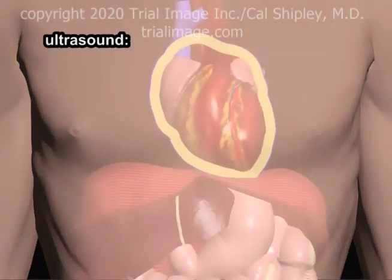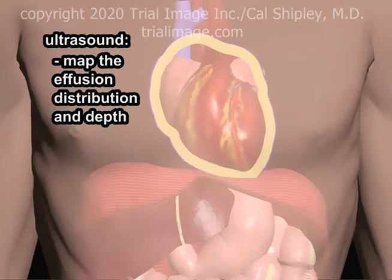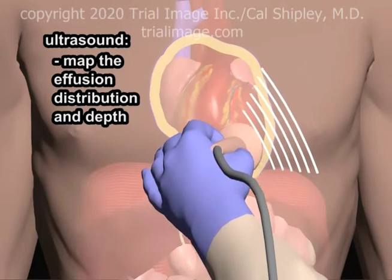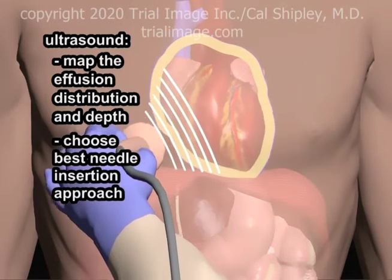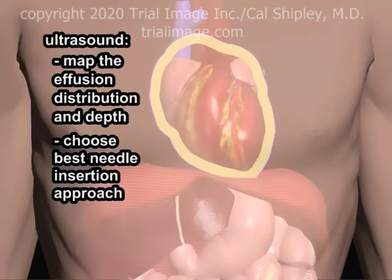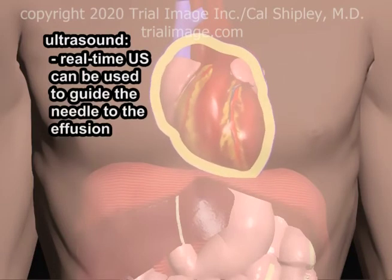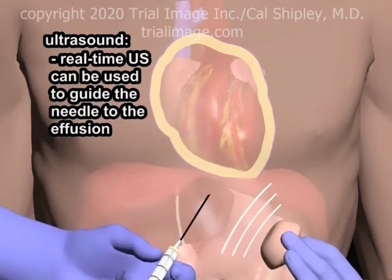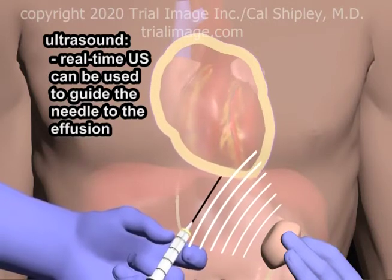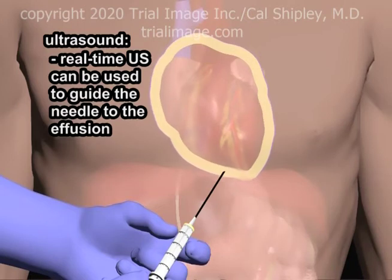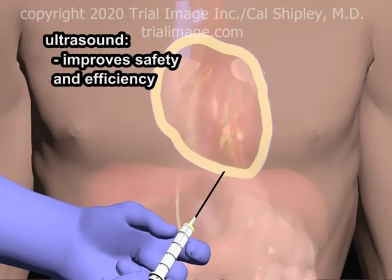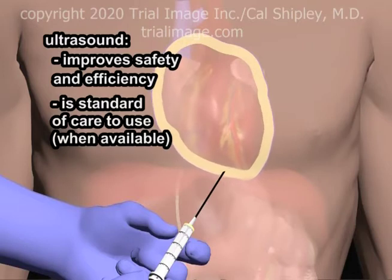The use of ultrasound in pericardiocentesis can contribute in two important ways. Using ultrasound prior to needle insertion, the deepest part of the pericardial effusion can be more accurately determined. With this information in hand, the operator may choose the needle insertion approach which will tap into the deepest area of the effusion. Additionally, once the needle insertion approach has been chosen, real-time ultrasound may be used to guide the needle into the effusion, reducing the chance of inadvertent injury to the cardiac chambers, coronary arteries, or lungs. In summary, the use of ultrasound in pericardiocentesis provides for a safer and more efficient procedure. In the United States, when available, using ultrasound in conjunction with pericardiocentesis has become the standard of care.